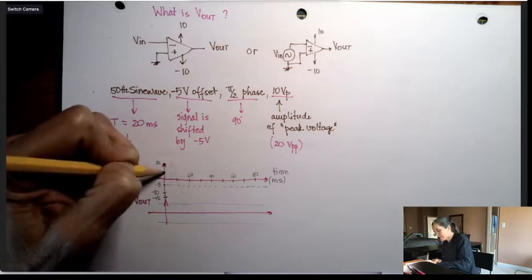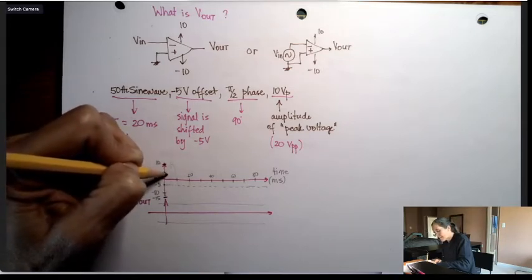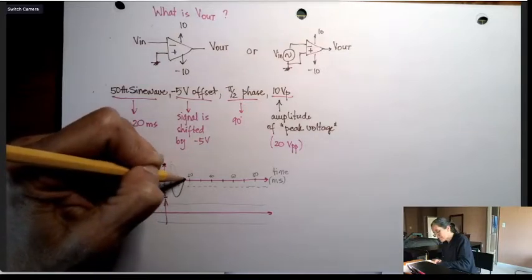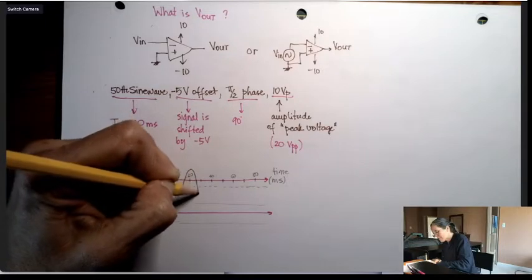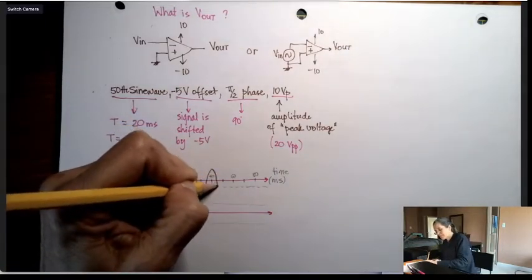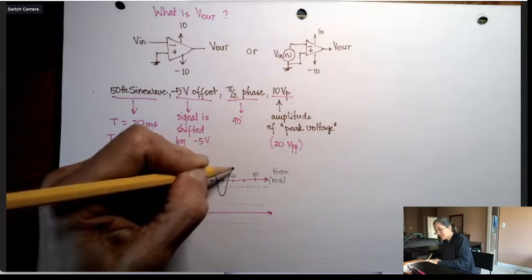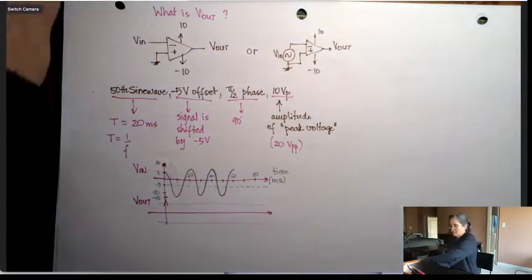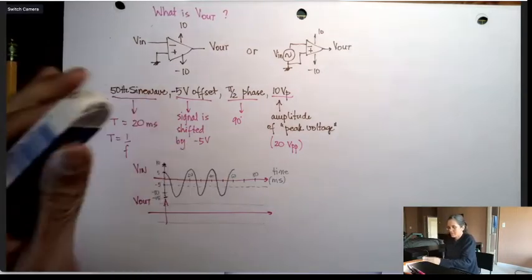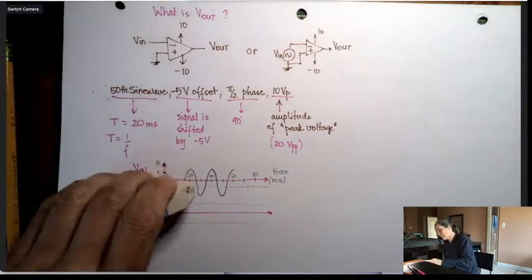So the offset of minus 5 volts makes this waveform here be centered around minus 5. So this is my waveform. And now let's do the circuit, finally.